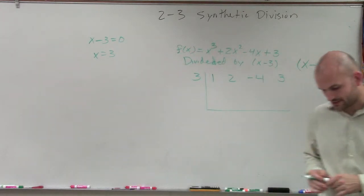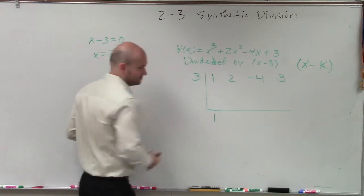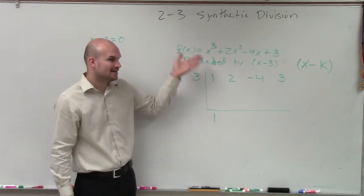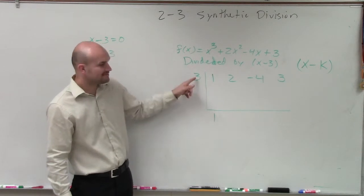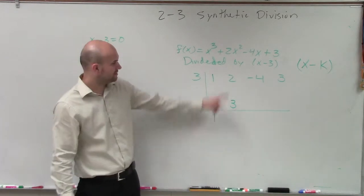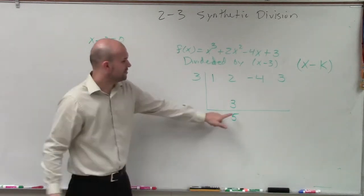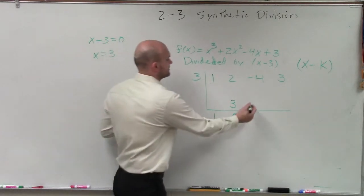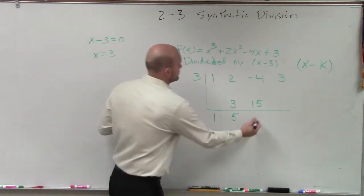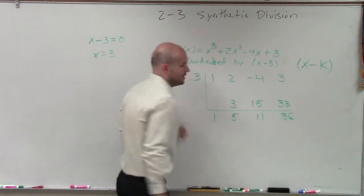Now, the next thing we do, the synthetic division algorithm goes like this. First term, you drop down. Just free. Then you multiply diagonally, add vertically. 1 times 3 is 3, goes to the next row. Then you add vertically. 2 plus 3 is 5. 5 times 3 is 15. Add vertically.